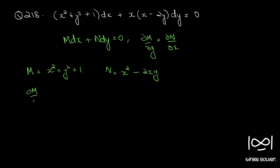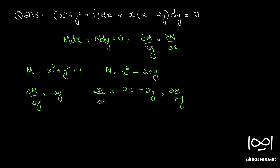So ∂M/∂y = 2y, and ∂N/∂x = 2x − 2y. As you can see, ∂M/∂y is not equal to ∂N/∂x.